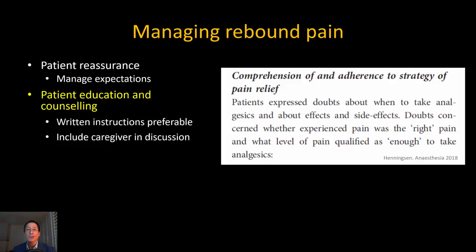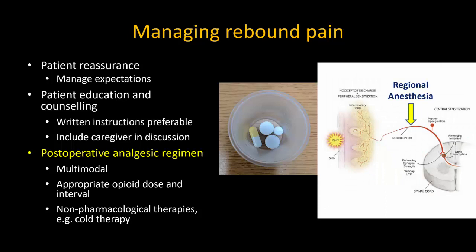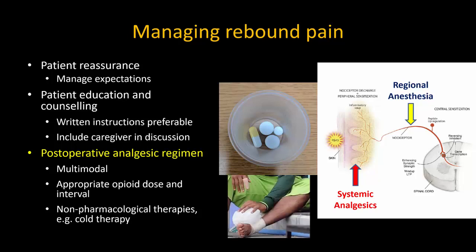Involving a family member or caregiver in the process is also very helpful if your patient agrees to it. Day surgery patients need to have an appropriate multimodal analgesic regimen prescribed for home use, and this does involve some guesswork as the severity of the pain will often not become evident until they have left our care and are at home. Remember that regional anesthesia blocks the transmission of nociceptive inputs from the periphery to the spinal cord but does nothing to reduce the inflammatory response at the site of injury or the development of peripheral sensitization. Non-opioid analgesics, particularly anti-inflammatory drugs, have a key role here and should be started earlier rather than later. The use of non-pharmacological therapies such as ice packs or cooling devices should also be encouraged.